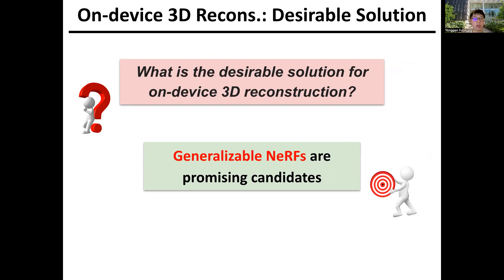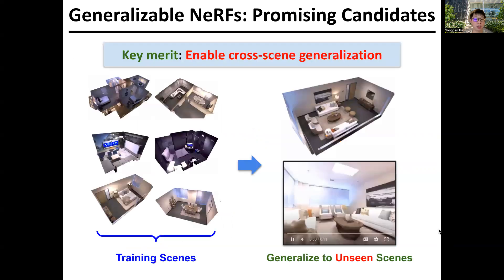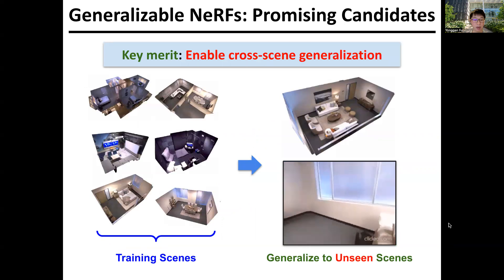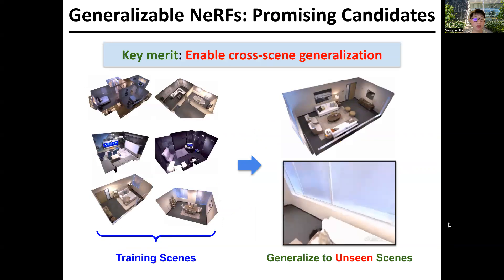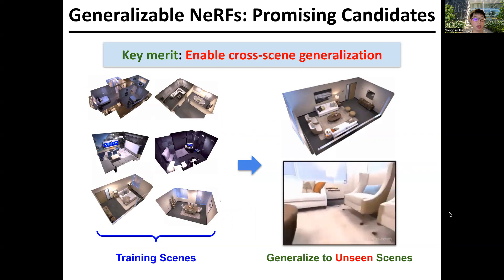In this work, we adopt generalizable neural radiance fields as promising candidates. This is because it can achieve decent rendering quality, and more importantly, the capability to achieve cross-scene generalization. In particular, generalizable NeRFs can be trained on a set of training scenes and then generalized to new scenes instantly with decent rendering quality.